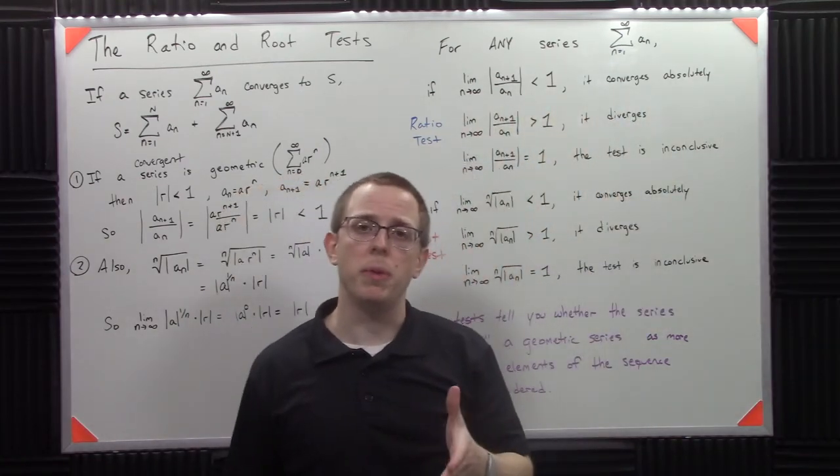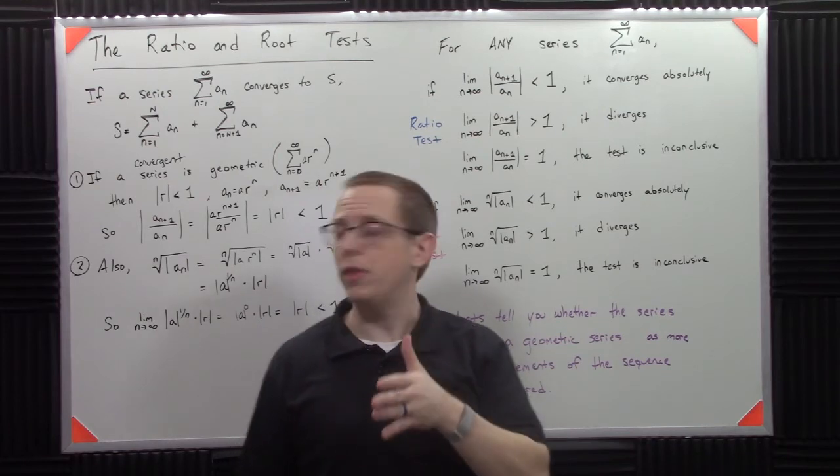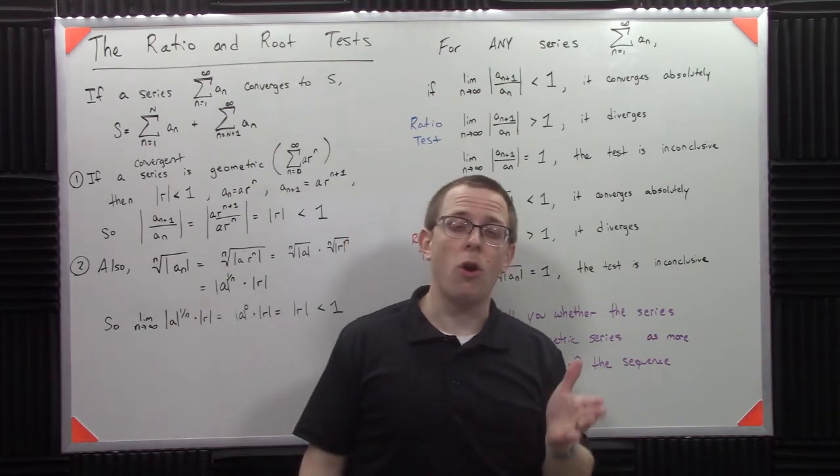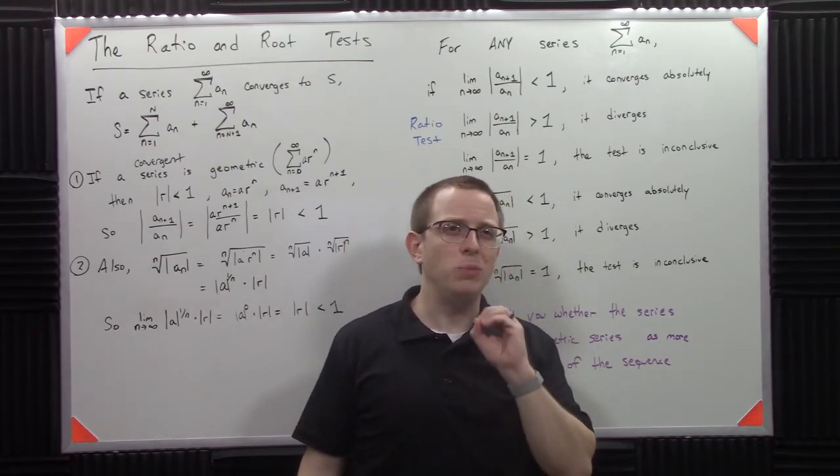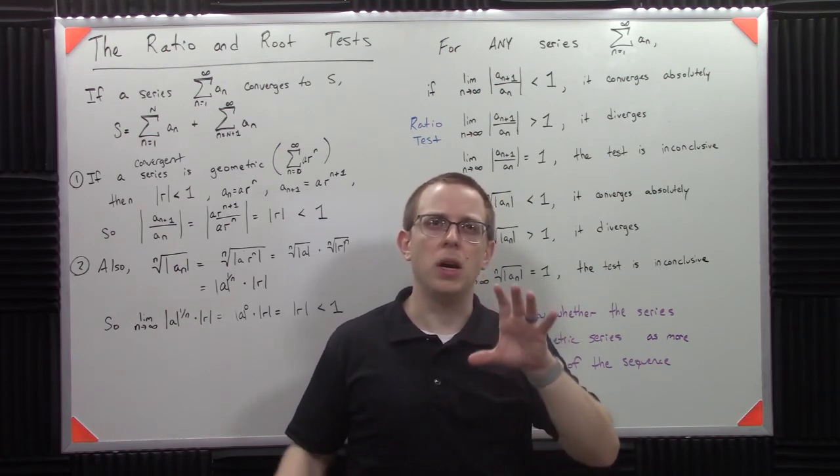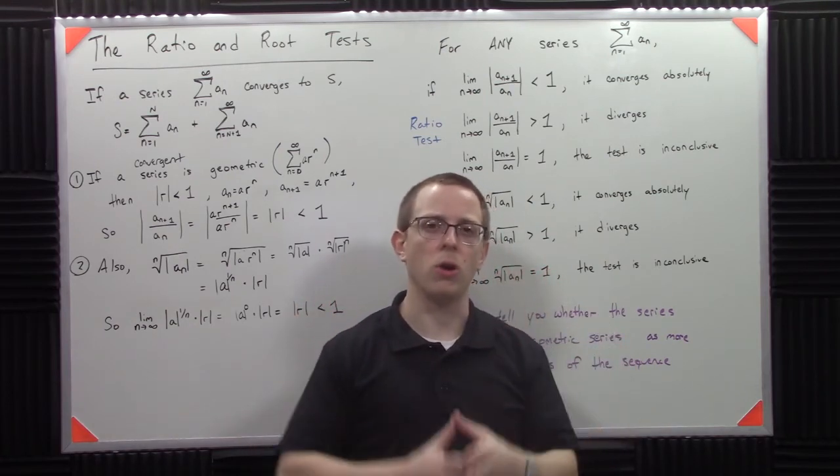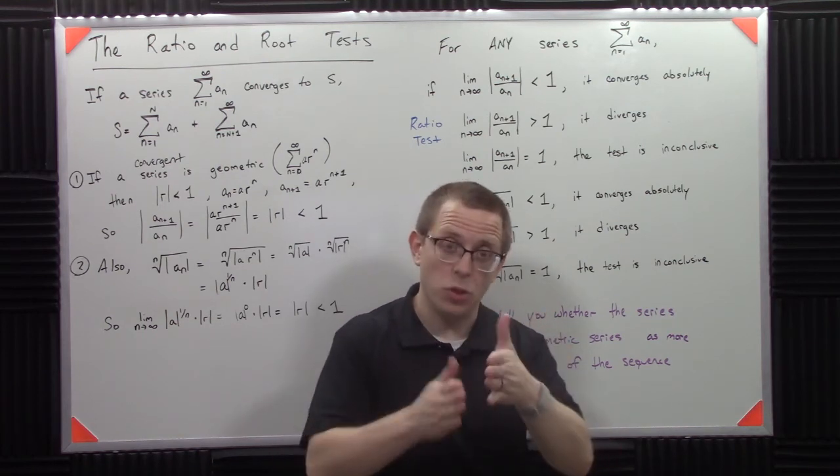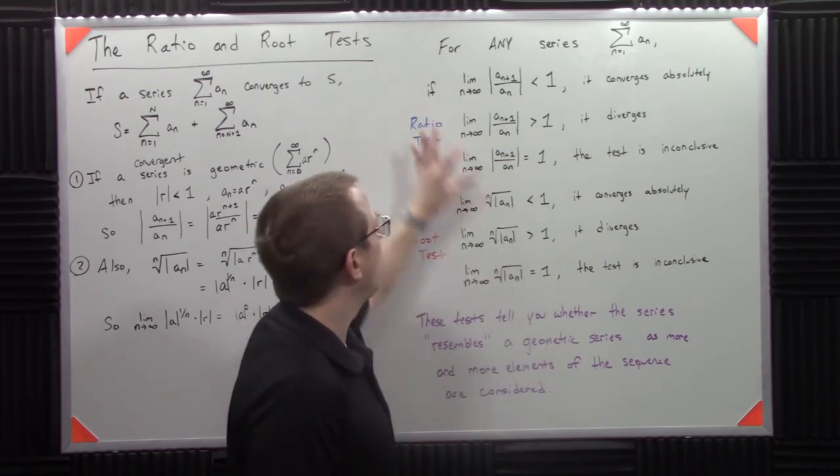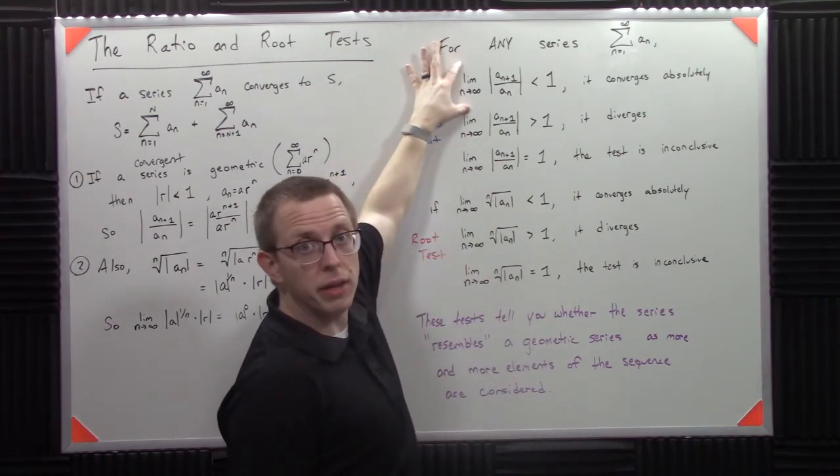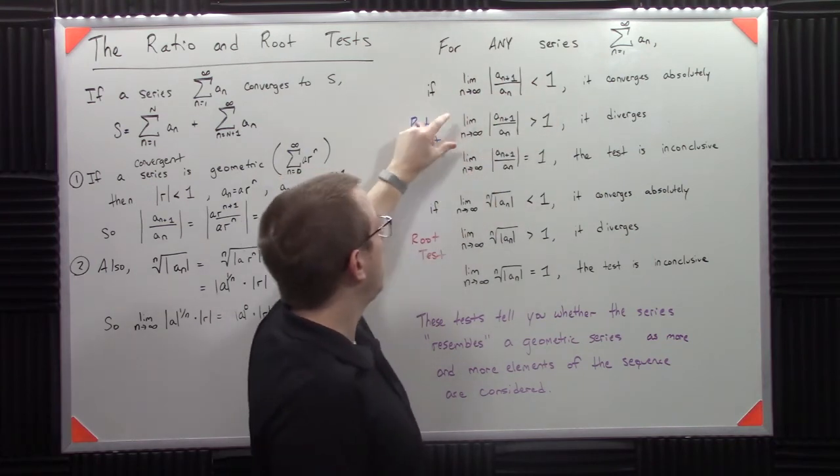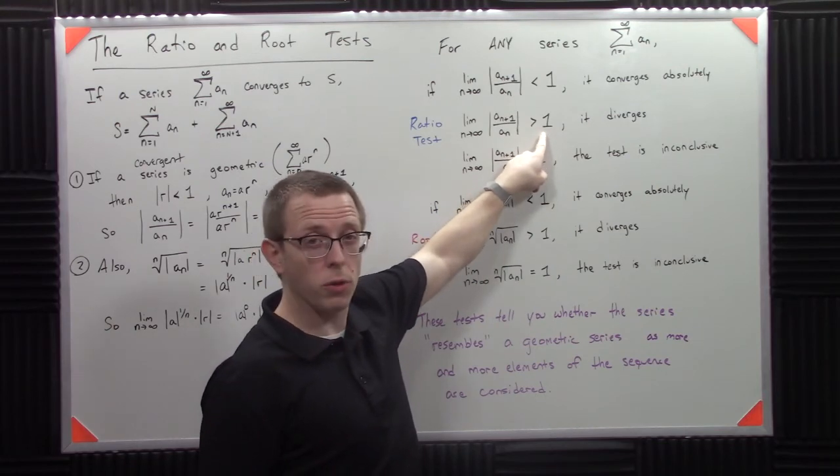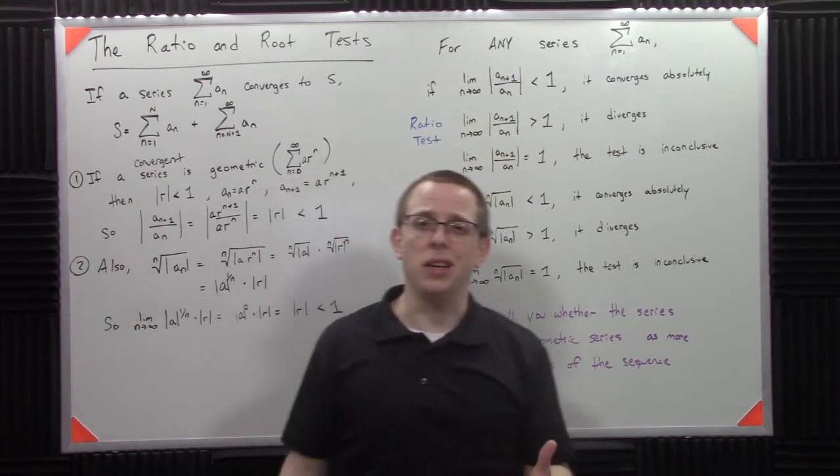We also know something else about geometric series, which is that if that r value is greater than 1, it will diverge. We also know that when r is equal to 1, it diverges. But we can't really use that here because the way that the limit process works, when r is equal to 1, it's a fixed value. It doesn't get to 1, it is 1. So in that particular case, it will converge absolutely if it looks like a geometric series with less than 1. It will diverge if it looks like a geometric series with that value greater than 1. But if it's equal to 1, it's just inconclusive.